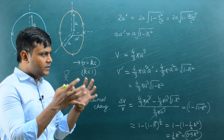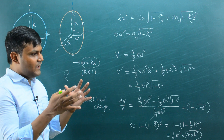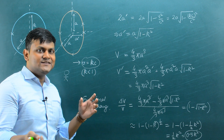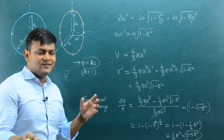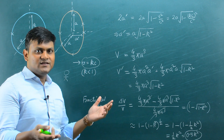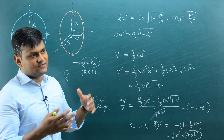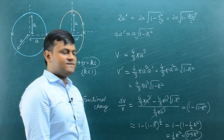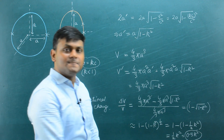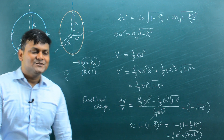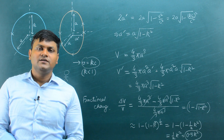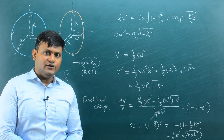So 0.5k² is the answer for the fractional loss in volume of a sphere as measured by an observer in relative motion compared to its volume at rest. This is a simple problem on volume contraction in special relativity.